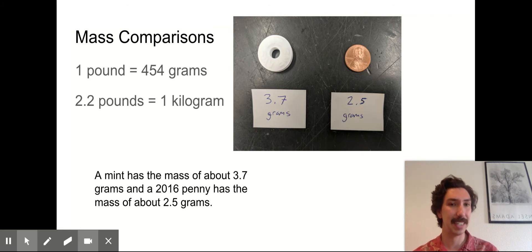I should say a 2016 penny because a long time ago when pennies were made of real copper they were a little bit heavier. So a 2016 penny is about 2.5 grams. So we can see one gram is not a lot of mass.